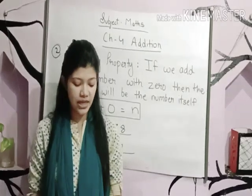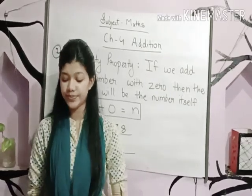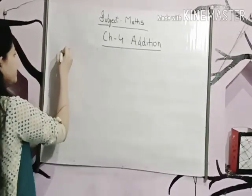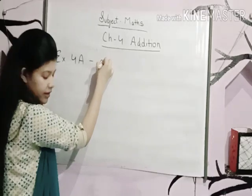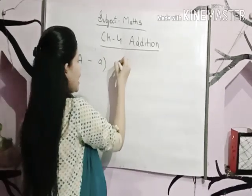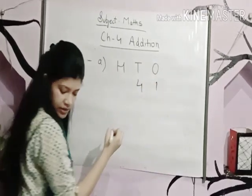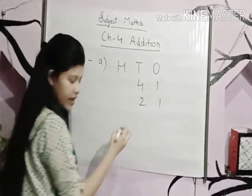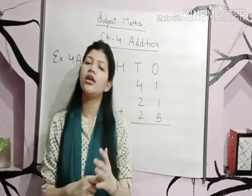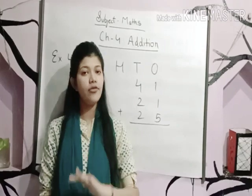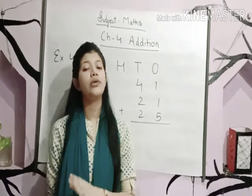Now let's practice some sums related to these topics. Open page number 47, Self Practice 4A, Exercise 4A. Question number 8: Add. You have to add — columns of 100, tens, 1s — 41, 21 and 25. First of all, we know how to arrange numbers under the column of hundreds, tens and 1s. Now we will learn how to add three 2-digit numbers together.